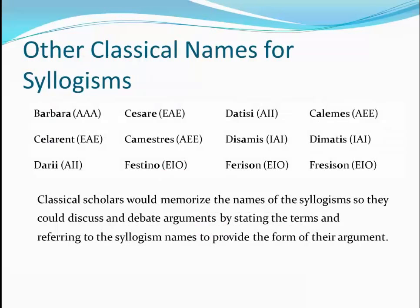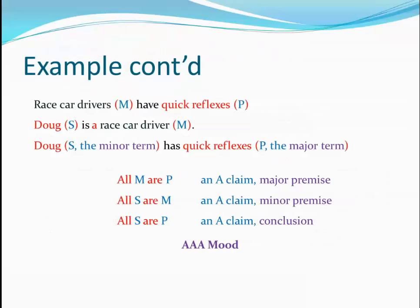We won't worry about learning the traditional names for the moods, but here's an example of some of them. The Middle Age scholars became so familiar with the names and logical properties that they could discuss and debate issues by stating the terms they were using and referring to the names for the arguments they wanted to make. A major point to keep in mind is that if an argument in a mood is shown to be logically valid, any argument using that same form will also be valid no matter what terms are used for the subject, predicate, and middle terms. This is a basic feature of deductive logic — the form of the argument determines its logical validity.